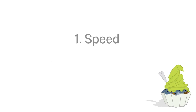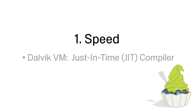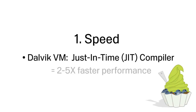We're working to continue improving overall speed and performance on Android. In Android 2.2, the newly introduced Dalvik JIT compiler delivers a 2-5x performance boost to CPU-bound code compared to Android 2.1.